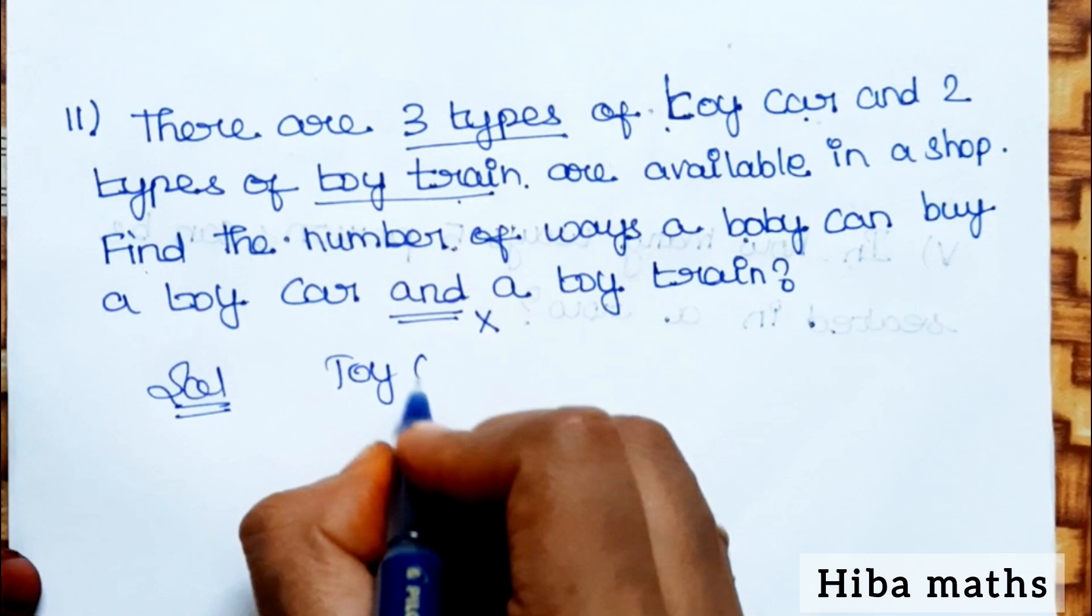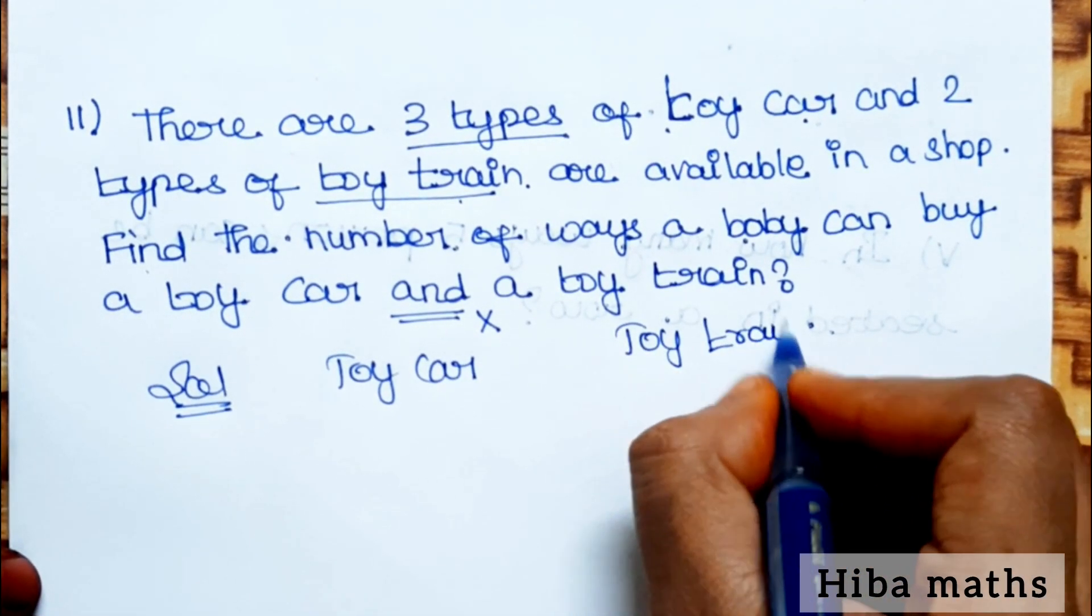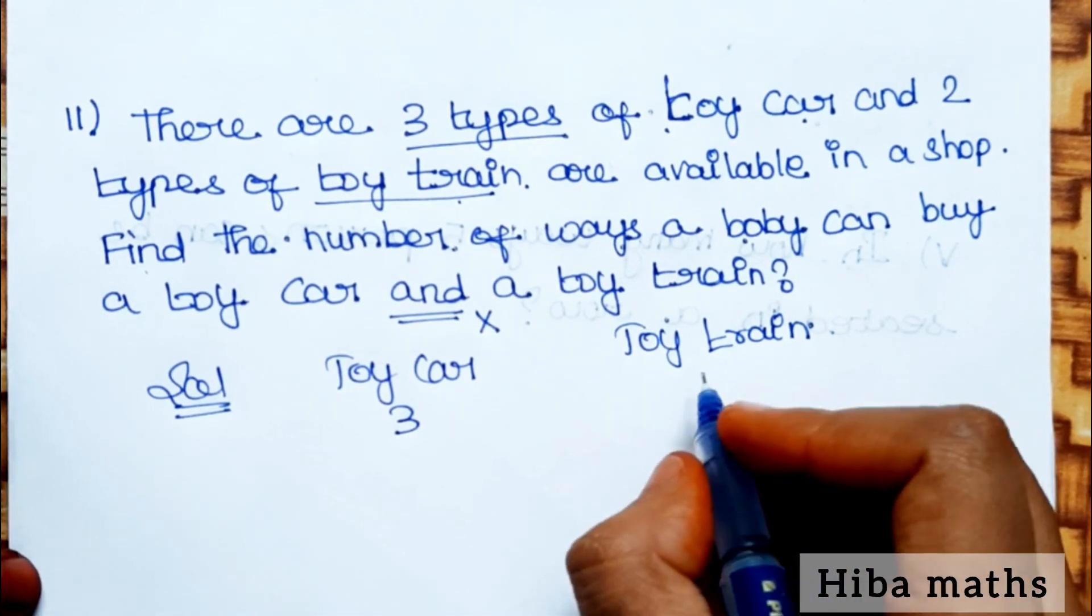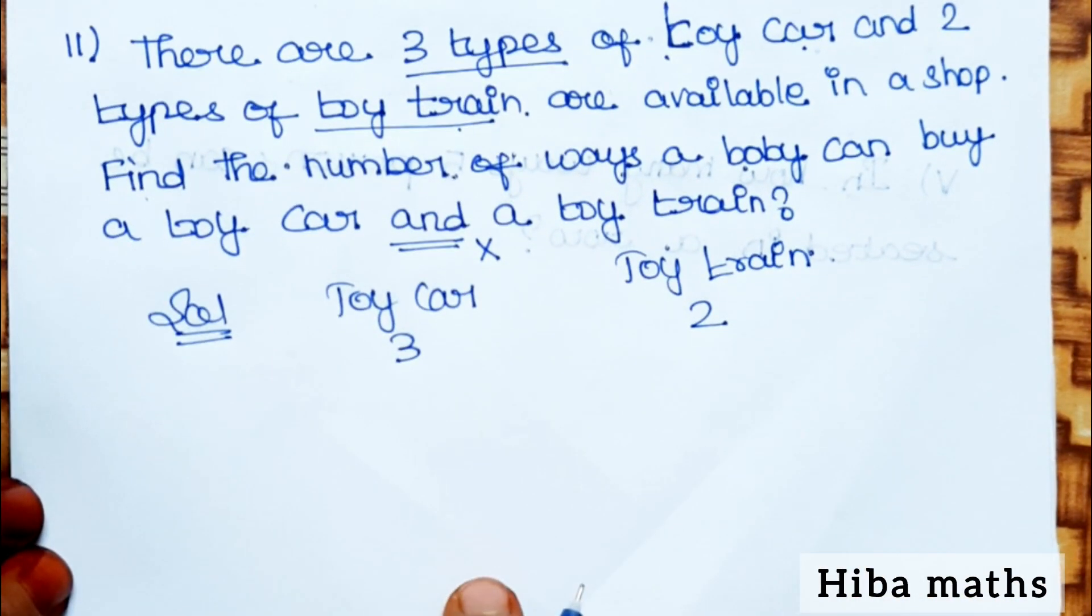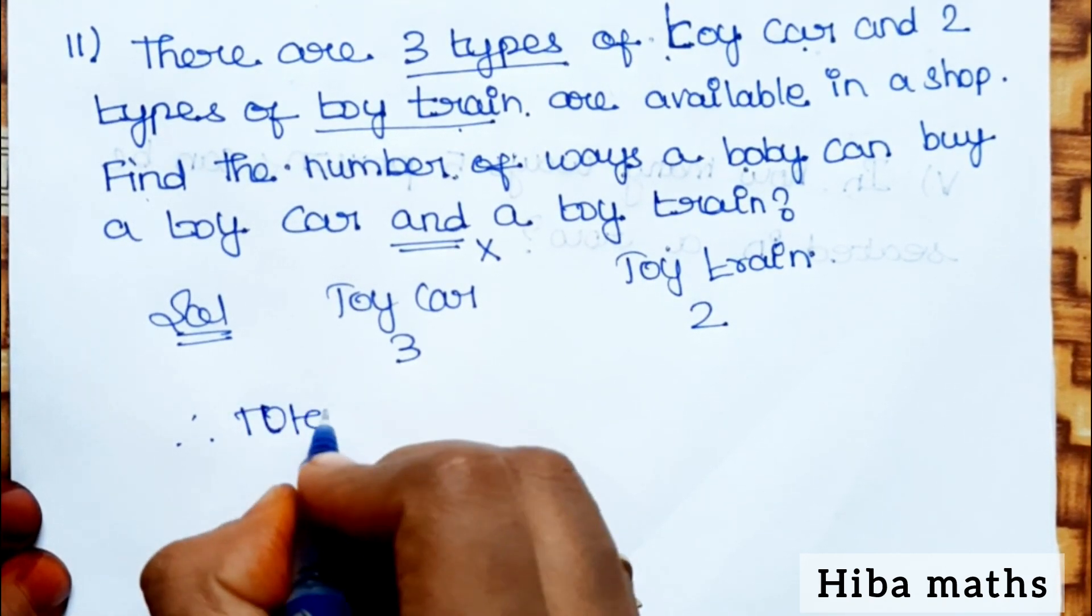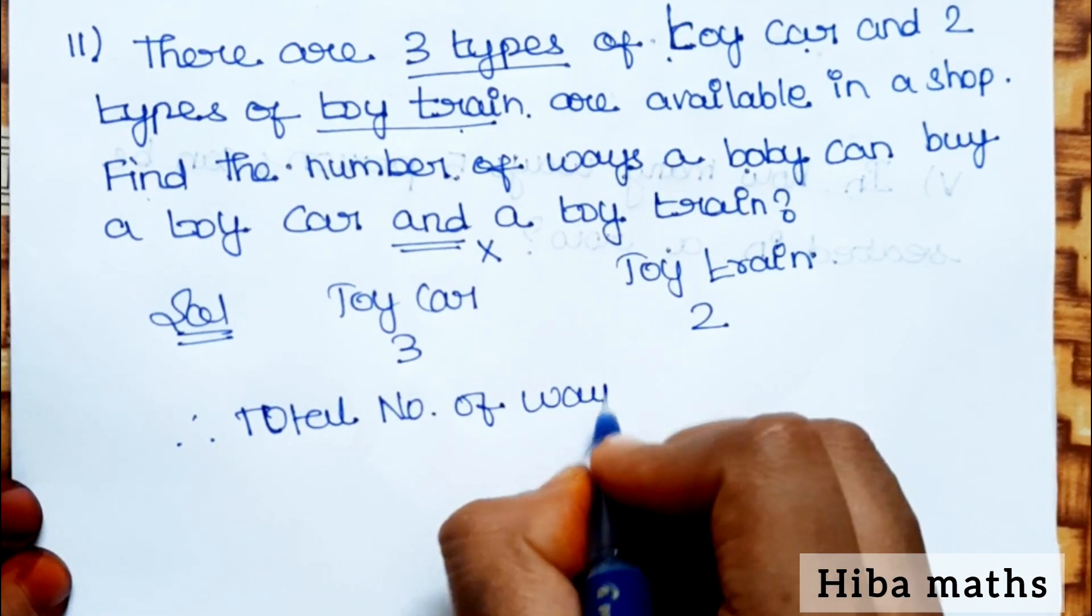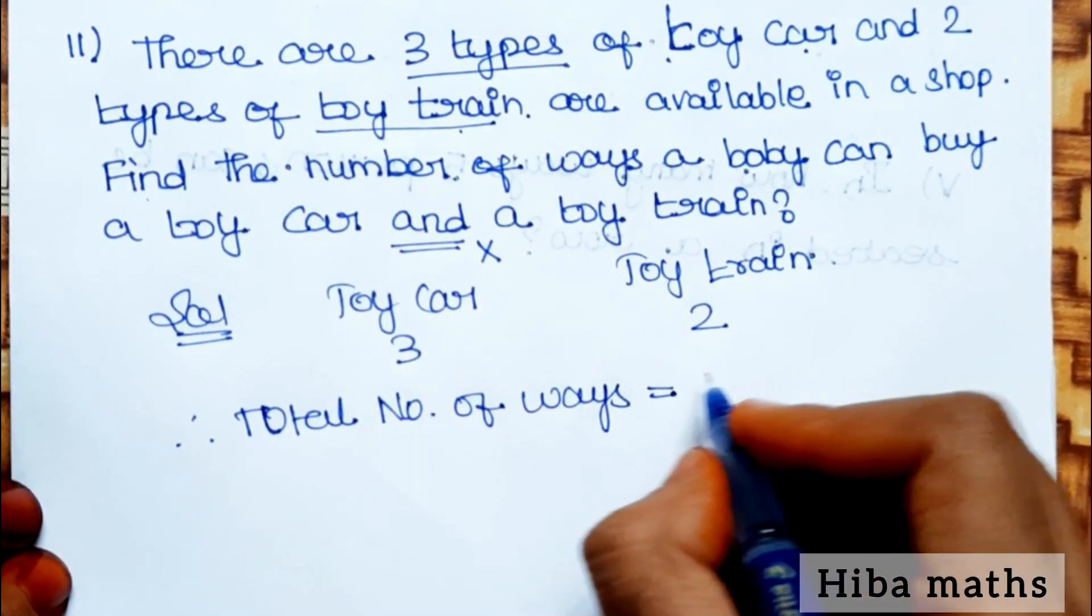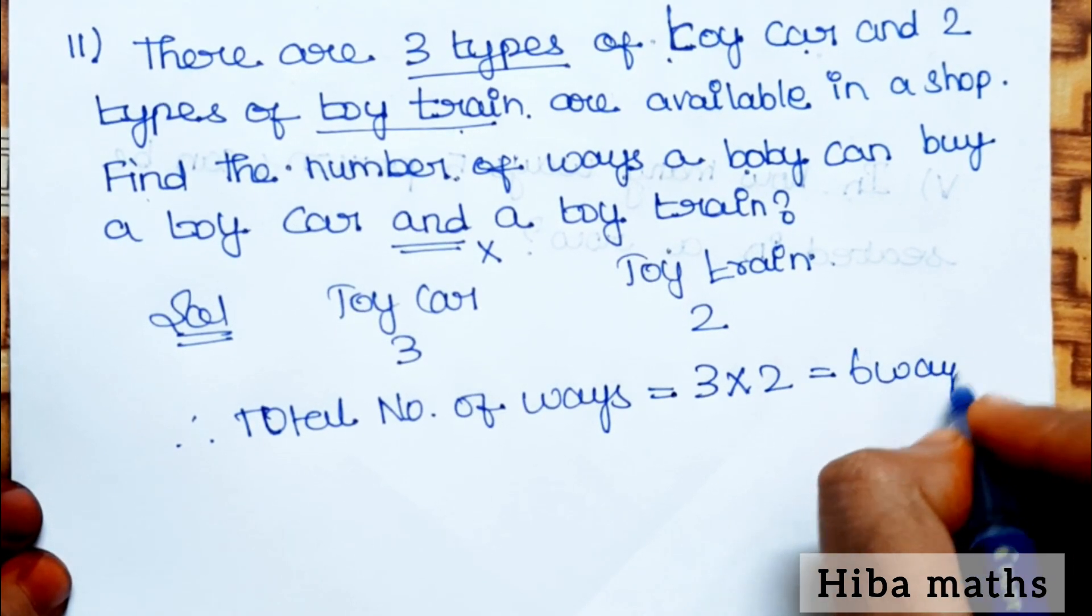Solution: Toy car equals 3, toy train equals 2. For and, we use multiplication. Therefore, total number of ways is equal to 3 into 2, that is equal to 6. So total 6 ways are there.